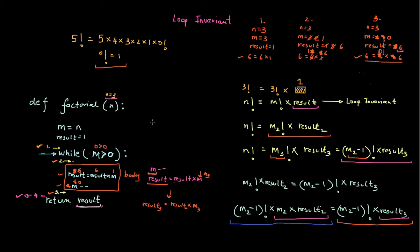Now think about a special use case: what if this loop doesn't begin at all? When would that be? If n is equal to 0, then result is still going to be 1 — that's what the code says. If the loop doesn't start, I just return result, which is 1. This means 0 factorial equals 1, which makes sense.